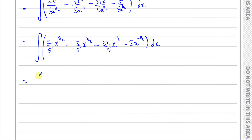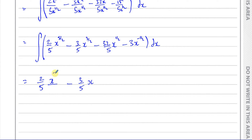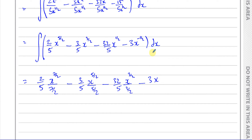Now I can write them without the integral sign when I start to integrate. I need to add 1 to the power and divide by the new power. So this is 2 over 5 times x to the power of 5 over 2, divided by 5 over 2 — you add 1 to the power, so that becomes 7 over 2 divided by 7 over 2. Minus 3 over 5 times x to the power of 3 over 2 — when you add 1 to the power, it becomes 5 over 2, because it's 3 over 2 plus 2 over 2 — divided by 5 over 2. Minus 32 over 5, and this is x to the power of — you add 1 to the power, that gives you 3 over 2 — divided by 3 over 2. Minus 3x to the power of — if you add 1 to negative a half, it's minus 1 half plus 2 over 2, which is positive 1 half — over the new power, which is 1 half. And don't forget plus c.